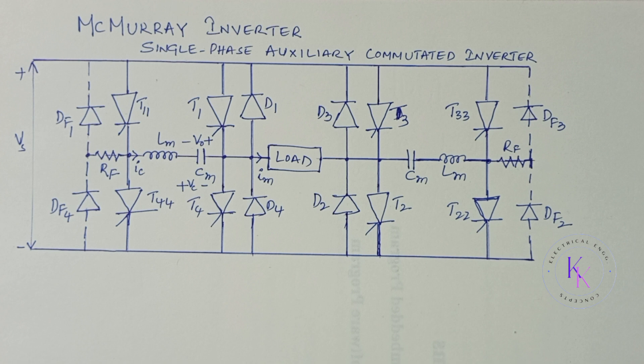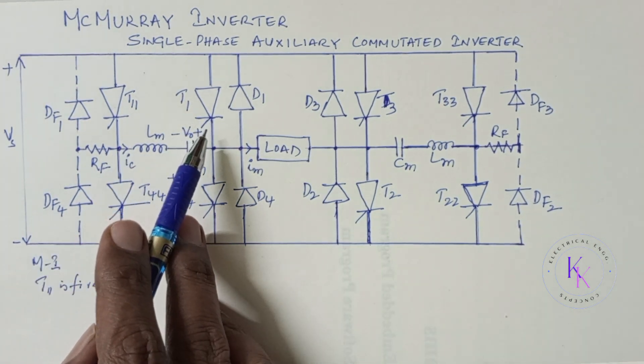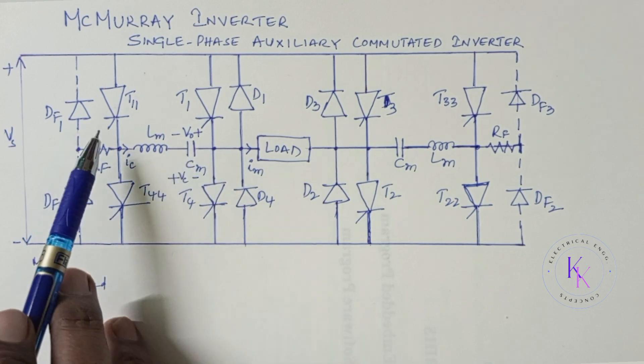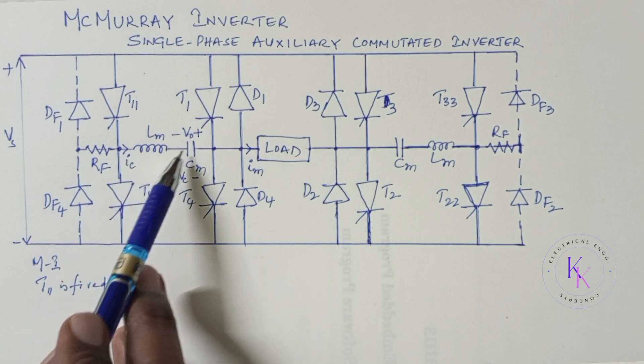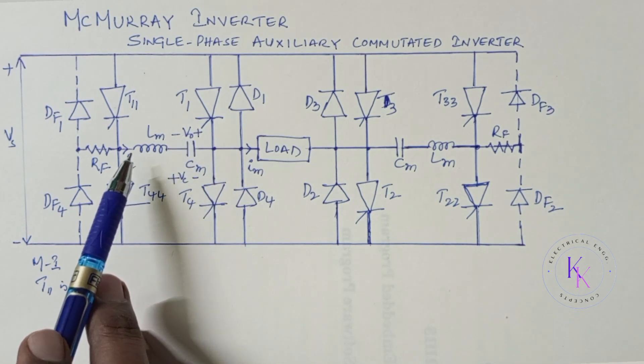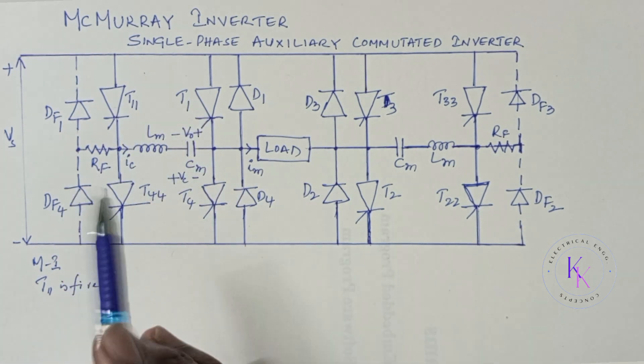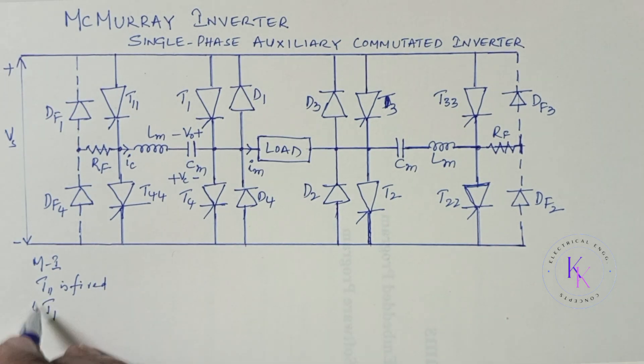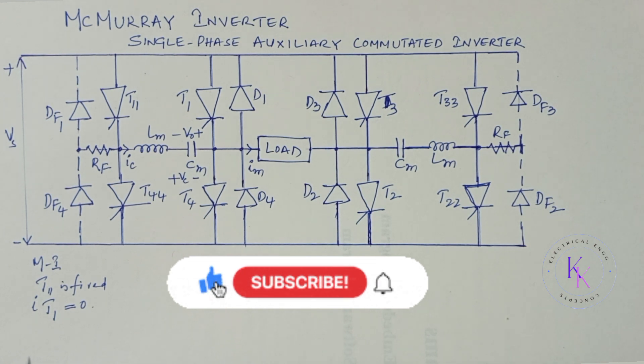The commutation process of thyristor can be divided into four modes. Mode 1: This mode begins when T11 is fired to turn off the thyristor T1, which is already in conduction mode. Now, the firing of T11 causes a resonant current flow through the capacitor CM and forces the thyristor T1 to fail. This can be considered a reverse current through the circuit LM, CM, T1, T11. This mode ends when the forward current of T1 falls to 0, that is IT1 equals to 0, when the capacitor current rises to load current, that is IC rises to IM, when T equals to T1.